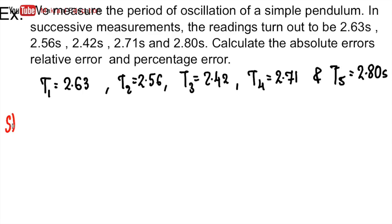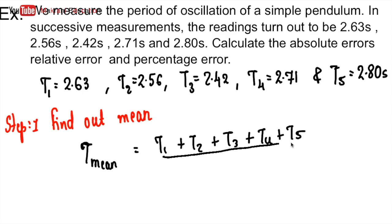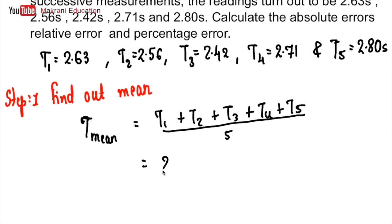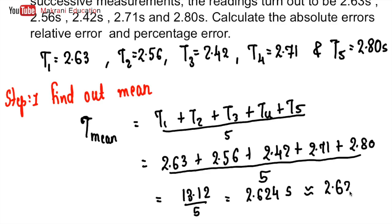Step 1: find the mean of all values. T_mean equals (T1 + T2 + T3 + T4 + T5) over 5, which equals (2.63 + 2.56 + 2.42 + 2.71 + 2.80) over 5. That gives 13.12 over 5, which equals 2.624 seconds, or 2.62 seconds correct to two decimal places.